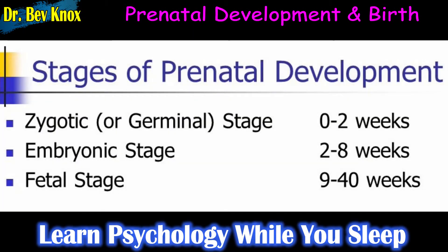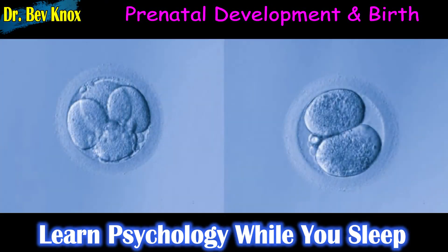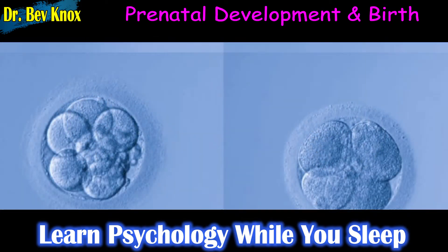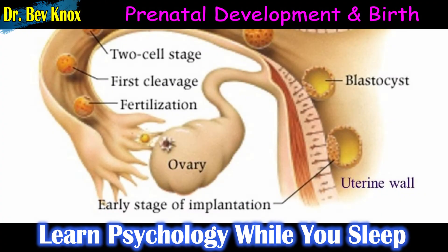Now let's move on to prenatal development. How many fertilized eggs — called zygotes — survived beyond the first two weeks? Fewer than half. But for us, good fortune prevailed. One cell became two, then four, each just like the first, until cell division had produced some 100 identical cells within the first week.